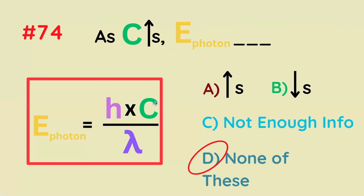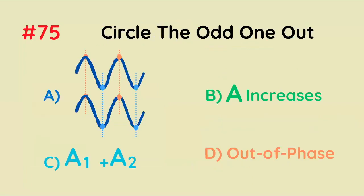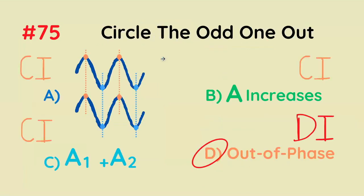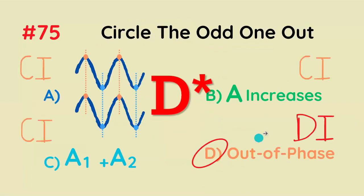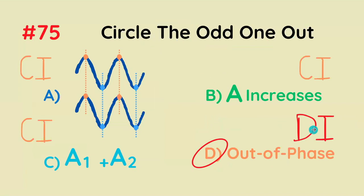The speed of light is always the speed of light. Circle the odd one out: it's going to be B, because it's the only one of these four that depicts destructive interference, whereas the others all depict constructive interference.